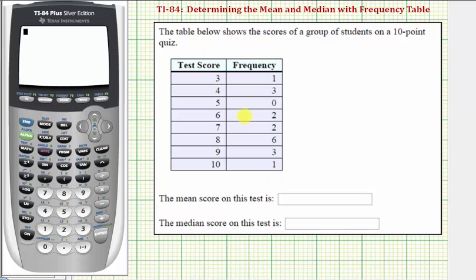The first step is to enter both the test scores and the frequency. So we press STAT, enter. Notice how we have some old data in L1. So we'll go to the top of the column by pressing up, clear, and then enter. This clears the entire column.